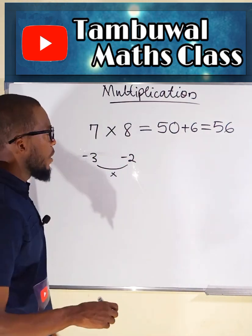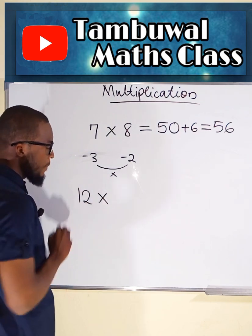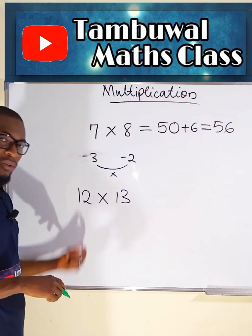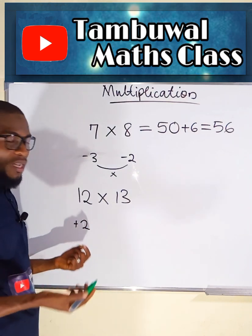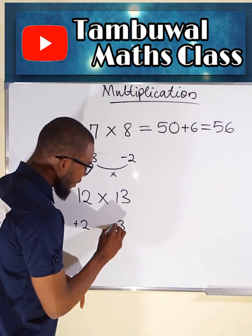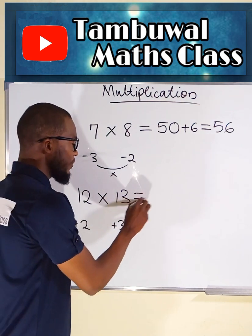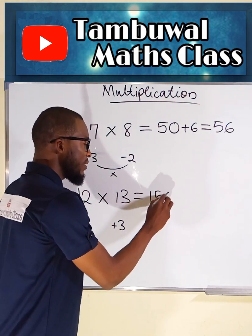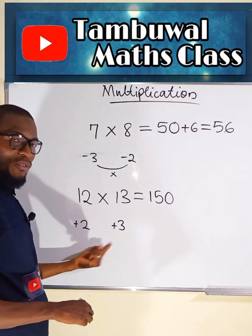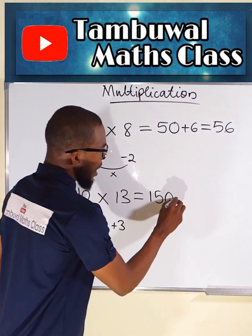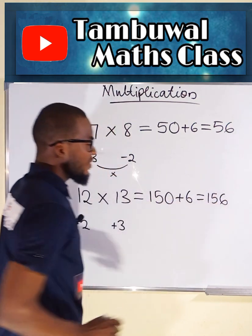Let us try other numbers. Suppose we want to multiply 12 by maybe 13. 12 is 2 greater than 10 — positive because it is greater. 13 is also 3 greater than 10. This plus this, or this plus this, will give us 15. But add 0 to the end. Multiply these together — 3 times 2 is 6. Then add 6 here, and this is equal to 156.